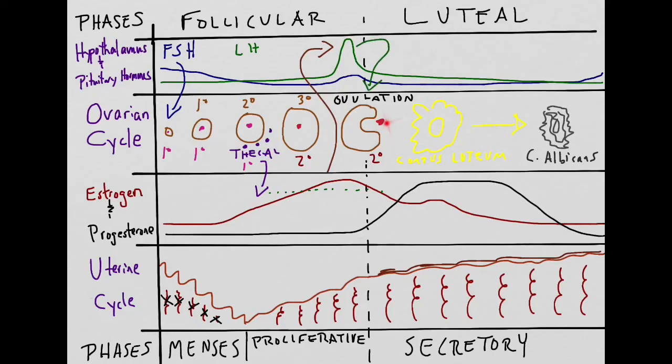This will cause luteinizing hormone release to spike and actually cause ovulation. During ovulation, a secondary oocyte is released. After ovulation, the follicle will turn into the corpus luteum, which contains lots of cholesterol. This cholesterol will be converted into progesterone. Progesterone levels will remain high until the corpus luteum turns into the corpus albicans 10 to 12 days later. Once this occurs, progesterone levels will decrease.